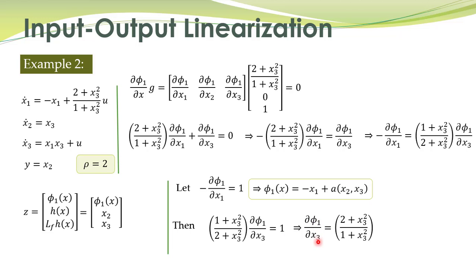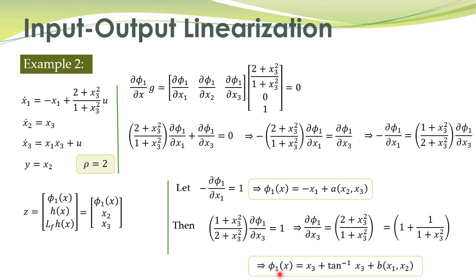We also solve a second equation from the PDE system by rearranging: partial phi_1 over partial x3 with remaining terms on the right-hand side. Integrating both sides with respect to x3: the integral of 1 gives x3, and the integral of 1/(1+x3^2) gives tan-inverse of x3. So phi_1(x) equals x3 plus tan-inverse(x3) plus a constant of integration, which can be a function of x1 and x2.